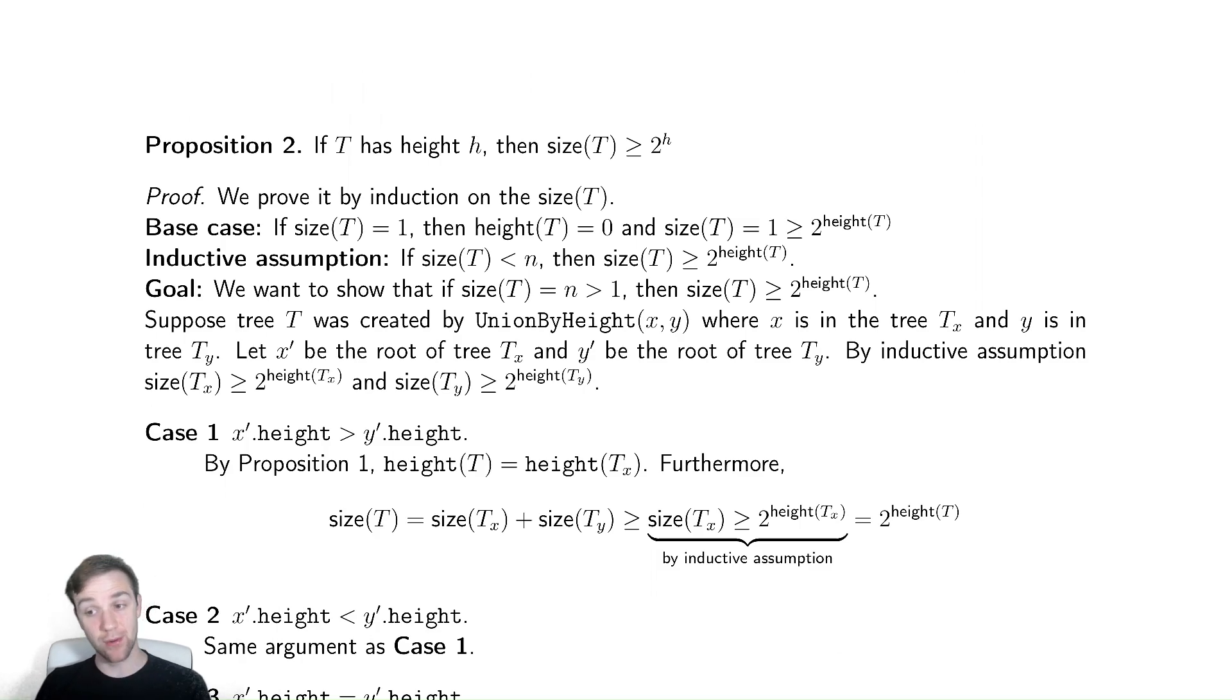So our next proposition is that if tree has height h, then the number of nodes is at least 2 to the h. And this should ring a bell as a thing that is very handy in trying to get runtimes. We've seen this exact thing when we looked at many things to do with trees. The proof here is very similar to the one we just did. It's induction. All the inductive setup is very straightforward.